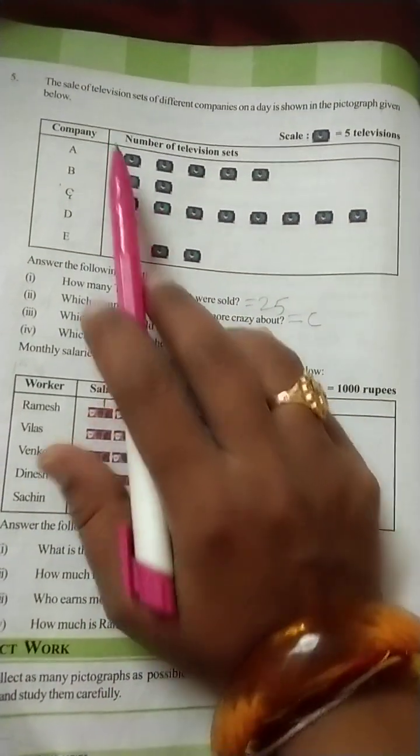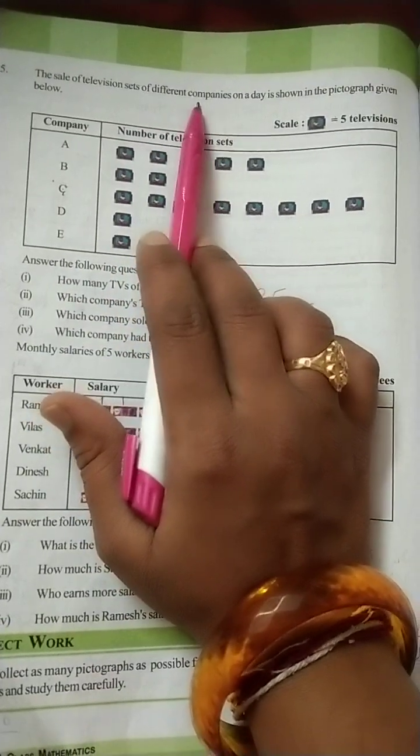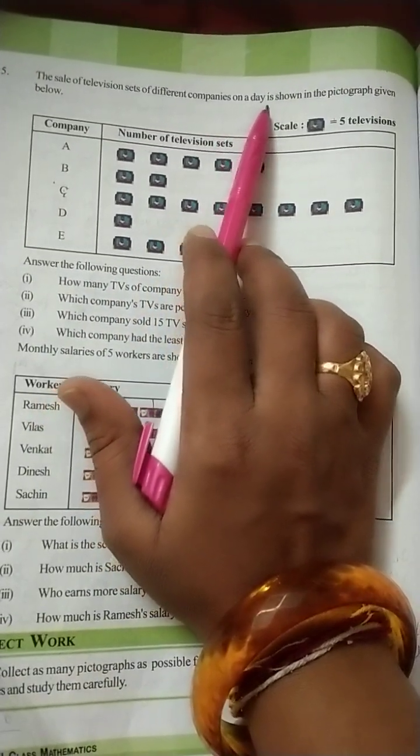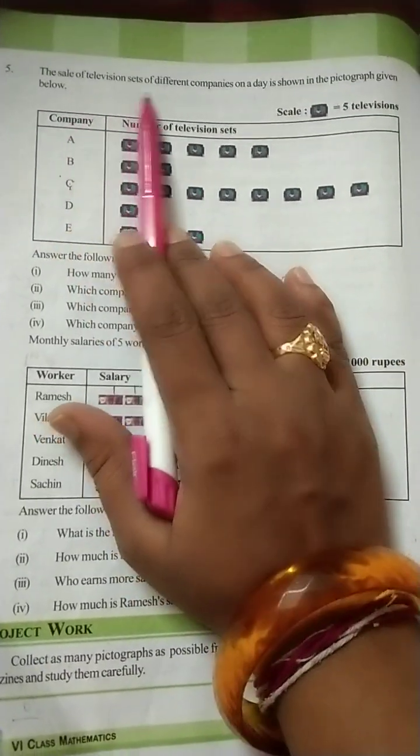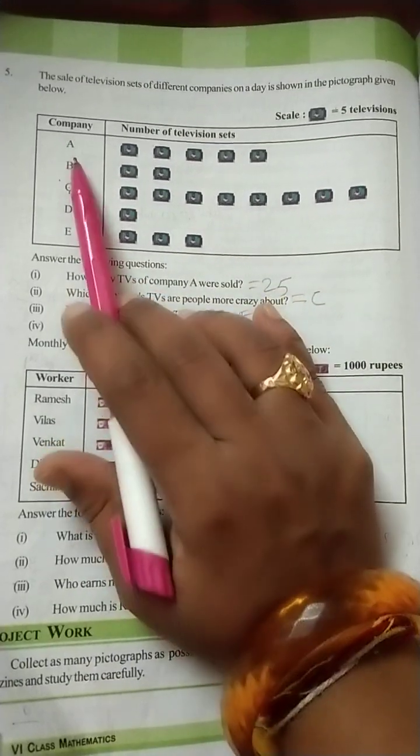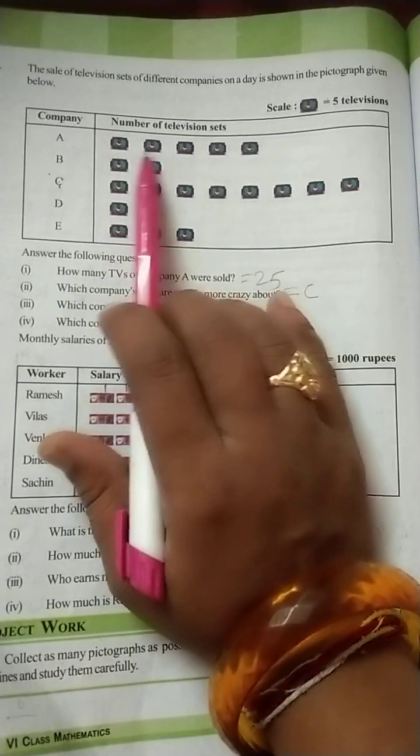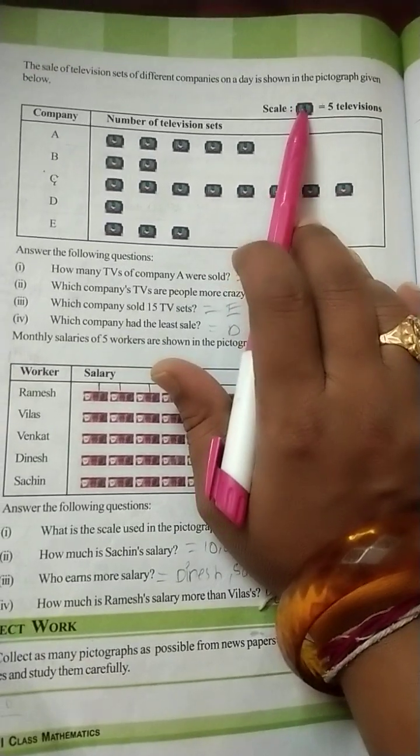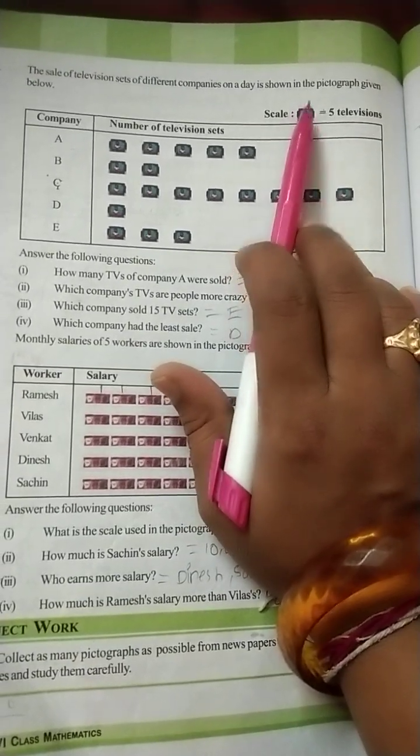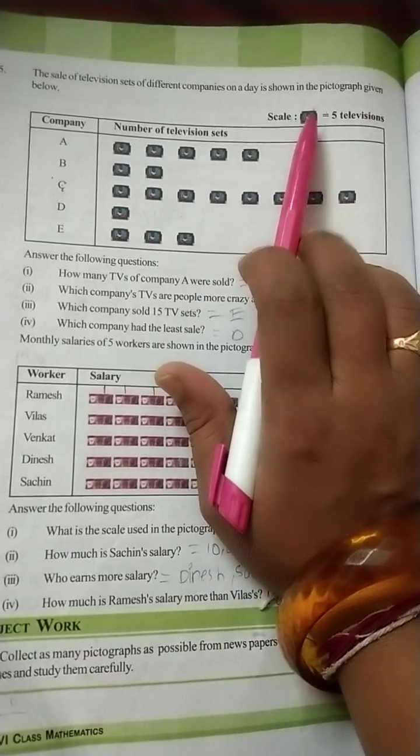Next is fifth question. The sale of television sets of different companies on a day is shown in the pictograph given below. See here sale of television of different companies. Company A, B, C, D, E given. So company A sets, number of sets 5. But here scale is given. Each TV set 5 televisions. 5 televisions symbol indicates 5 televisions.